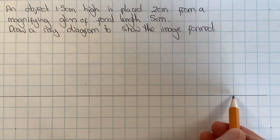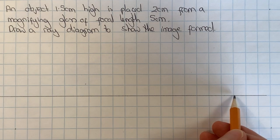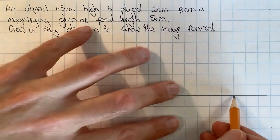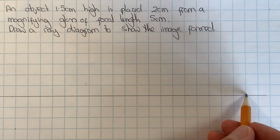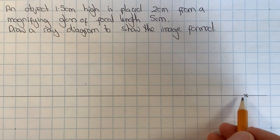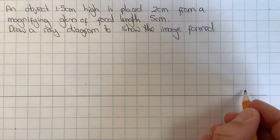With a magnifying glass ray diagram, you need lots of space before the lens. So to make sure that I don't run out of space, I'm going to mark the focal length of the lens quite far over on the paper.